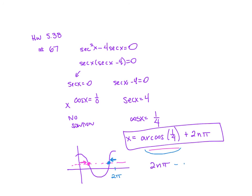So 2n pi minus arc cosine of one-fourth, and that is our other value that you need. So there's always two values that it hits on the cosine curve. Hopefully this helps out.